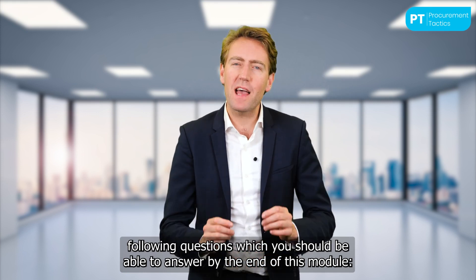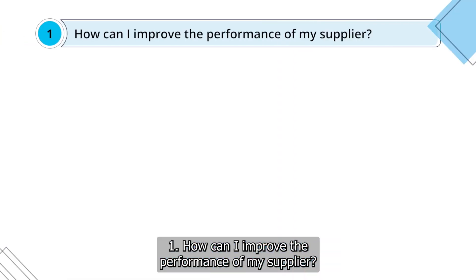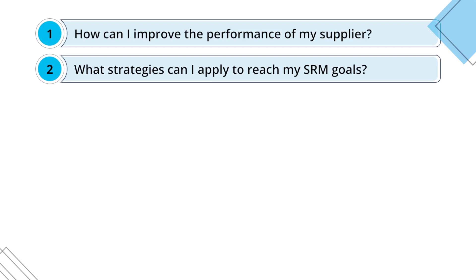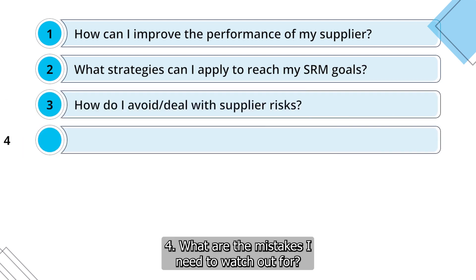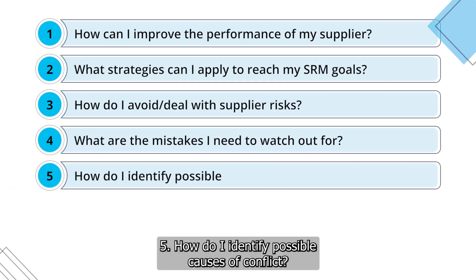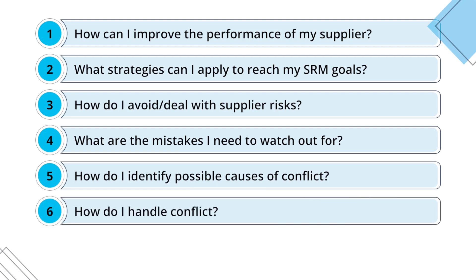How can I improve the performance of my supplier? What strategies can I apply to reach my SRM goals? How do I avoid or deal with supplier risks? What are the mistakes I need to watch out for? How do I identify possible causes of conflict? And how do I handle conflict?